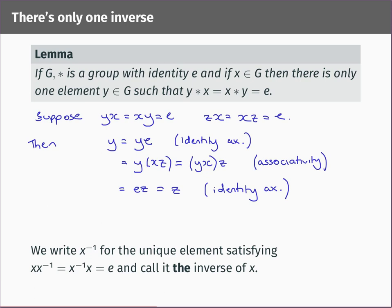We've shown that y equals z, so there is only one element with the inverse property. We introduce the notation x to the power minus one for the unique element satisfying x times x-inverse and x-inverse times x equals E. We call this the inverse of x, because we know there's only one element which is a multiplicative inverse to x in the sense of the inverse axiom.